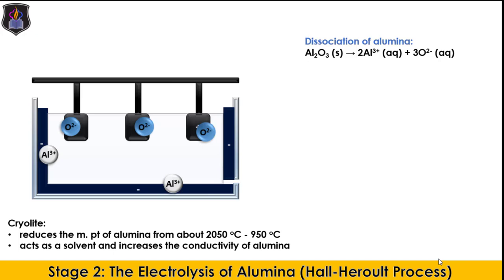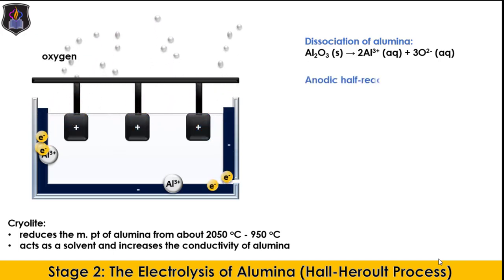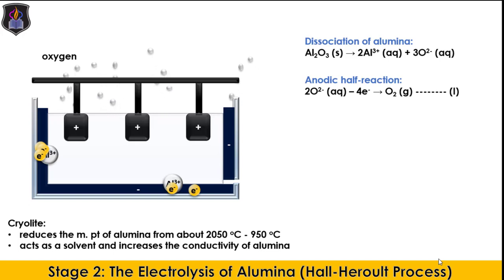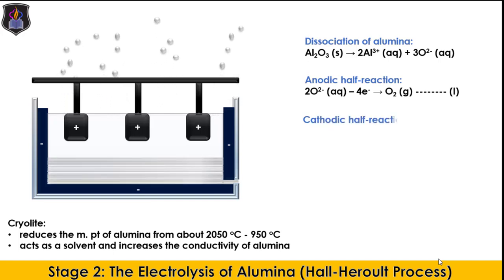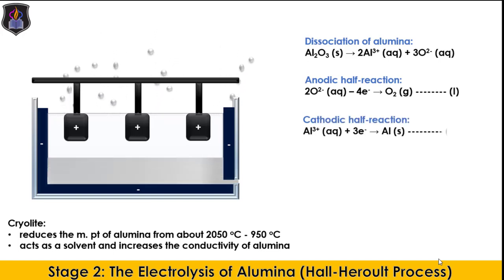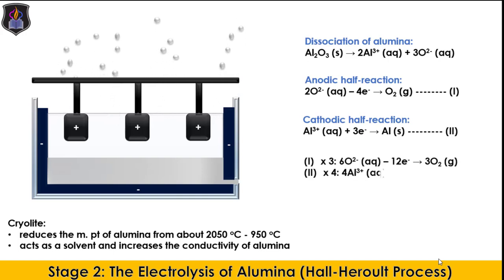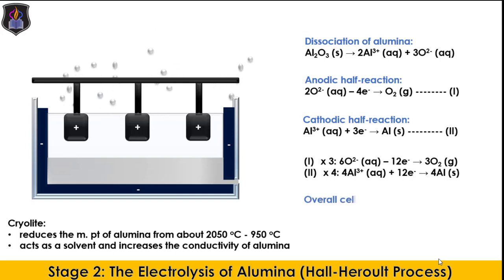At the anode, the oxide ions undergo oxidation by losing two electrons to form oxygen gas, as shown in the anodic half-equation. The electrons lost travel through the external circuit to the cathode. At the cathode, the Aluminium ions undergo reduction by gaining electrons and are deposited as metallic Aluminium, according to the cathodic half-equation. To balance the number of moles of electrons transferred, we multiply the oxidation half-equation by 3 and the reduction half-equation by 4, then combine the two balanced half-equations to get the overall cell reaction.